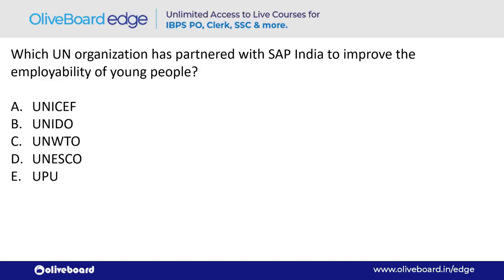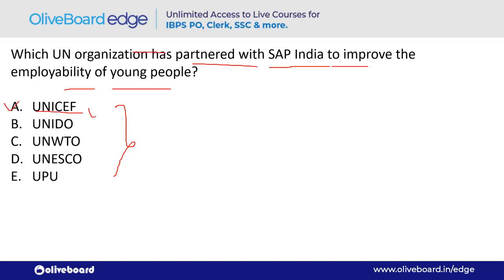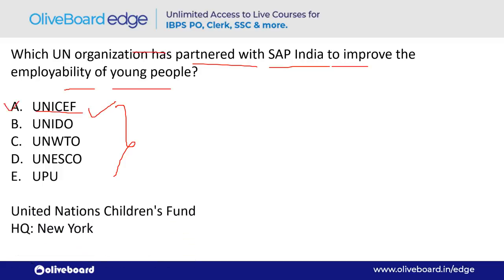Which UN organization partnered with SAP India to improve the employability of young people? The answer is UNICEF — option A. UNICEF's headquarter is in New York. UNICEF's full form is United Nations Children's Fund.